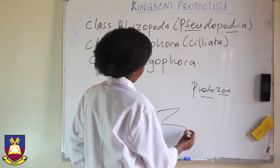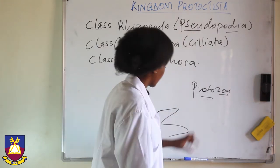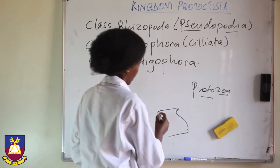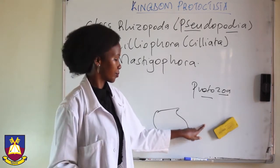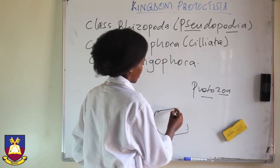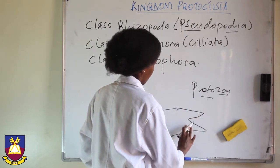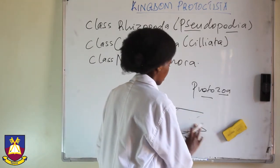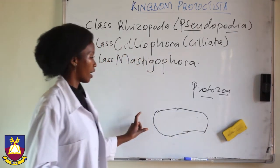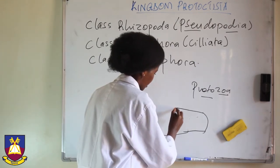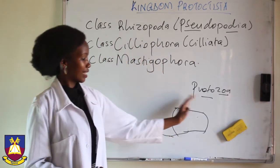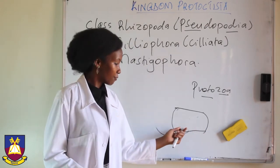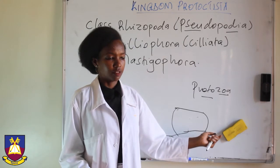As they move, there are extensions of their cytoplasm. When the cell wants to move to a point, it makes extensions of the cytoplasm — say the cell is here and wants to move here, it extends so that this part also extends, and when that part reaches the new point, the rest of the cell follows. It goes on extending like that — it is a sort of crawling. These pseudopodia enable the movement of the organism.